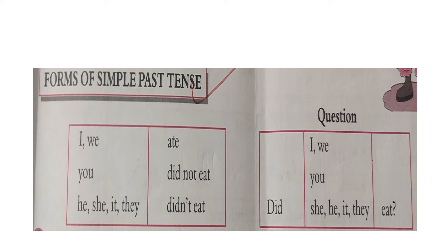'You ate some rice and vegetable curry' — affirmative in the past tense. 'She did not eat biscuits for lunch' — negative in past tense. 'Did you eat some rice and vegetable curry for lunch?' — interrogative in past tense.